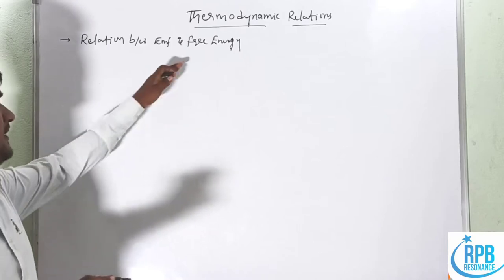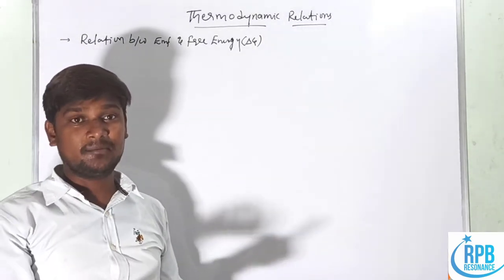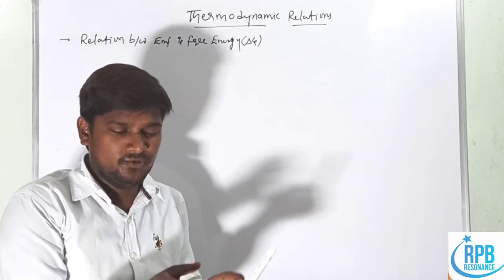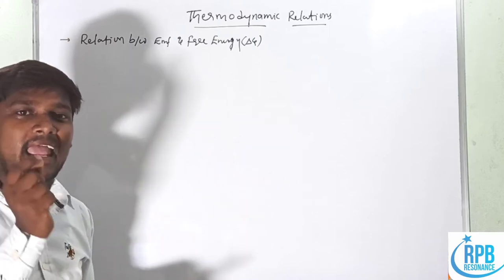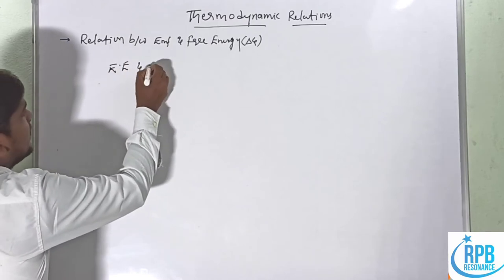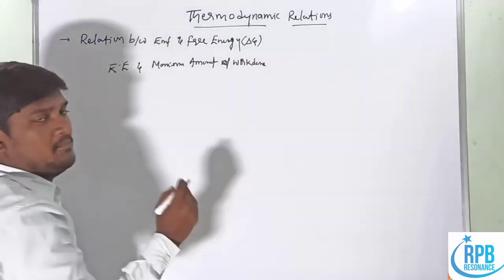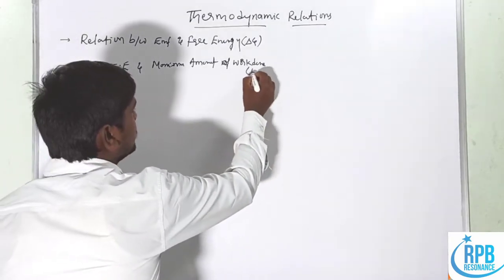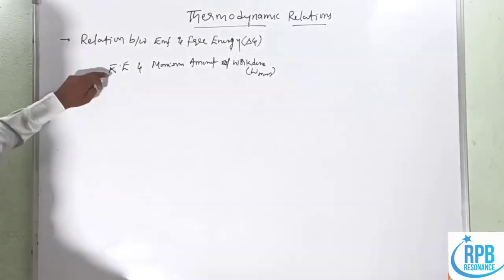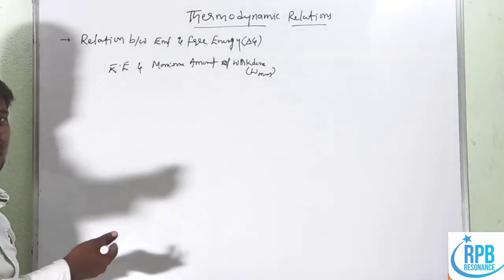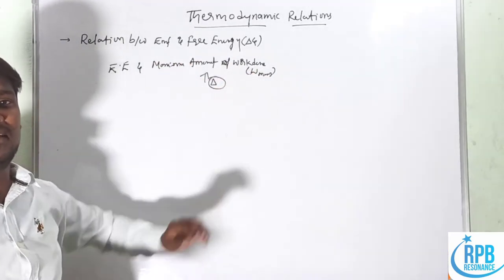Free energy is denoted as delta G. An electrical cell which produces some current can be used to do work — for instance, to run a motor. Thermodynamic applications give a relation between electrical energy and the maximum amount of work obtainable from a cell. The maximum work done is related to the thermodynamic term, and EMF is the electrochemical term.